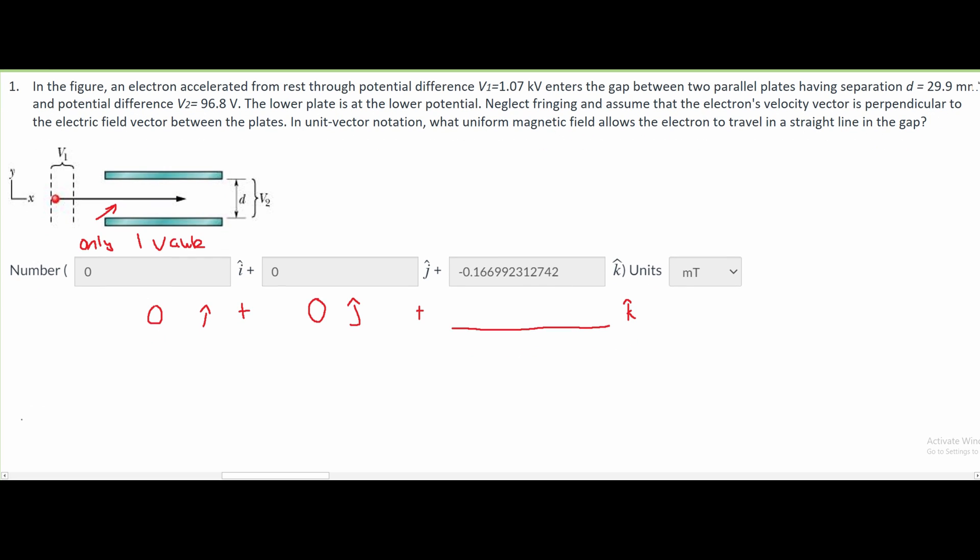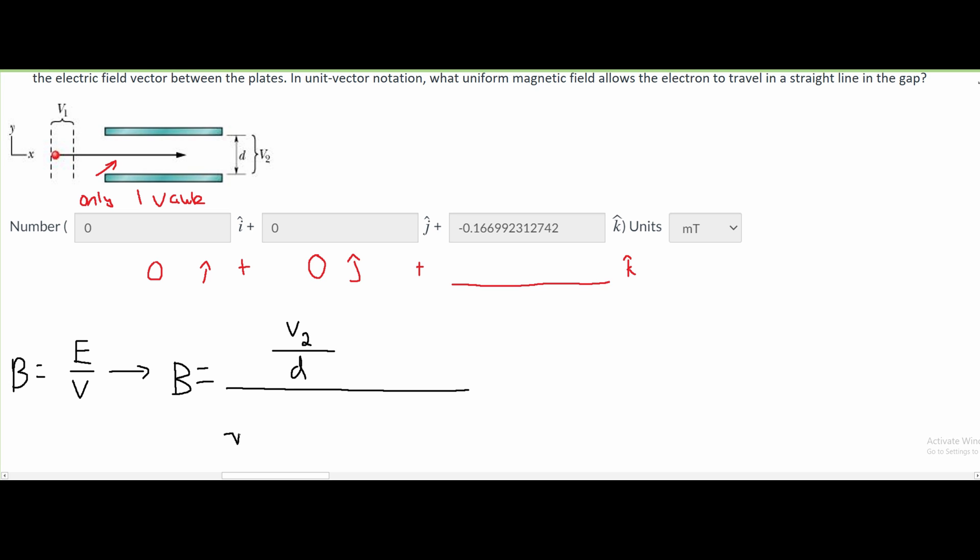To do this, we need to use this formula: B equals E divided by v. This is going to turn into B equals our V2 divided by the separation d, over the square root of...